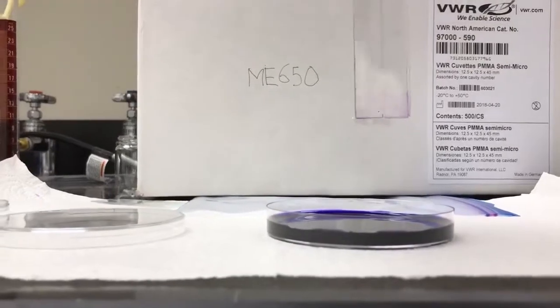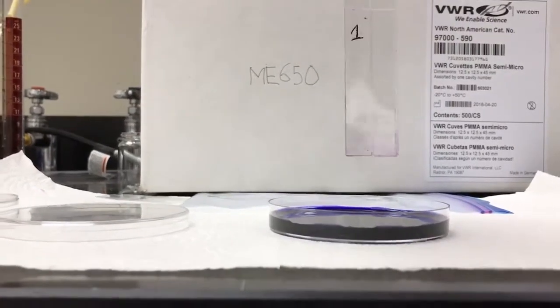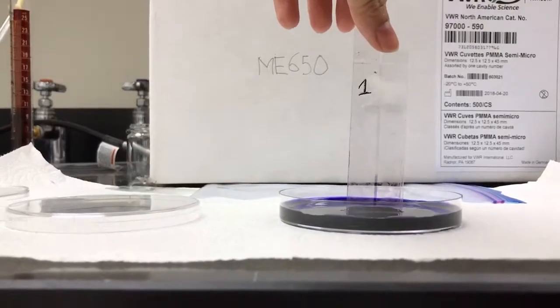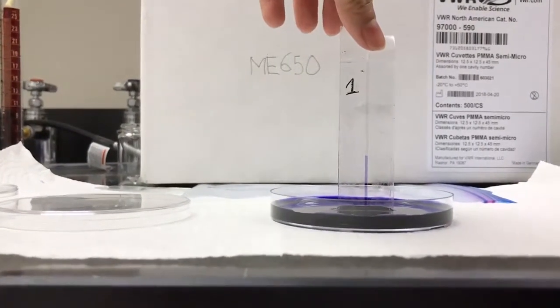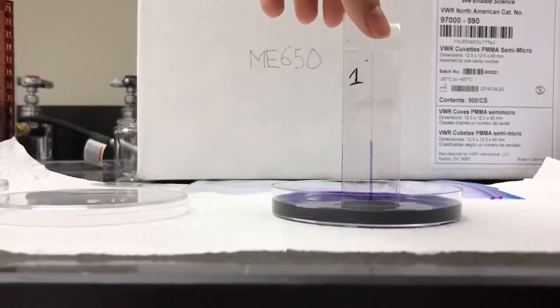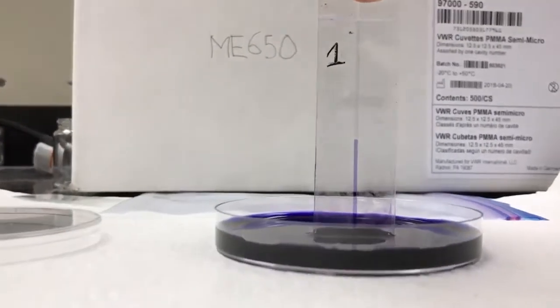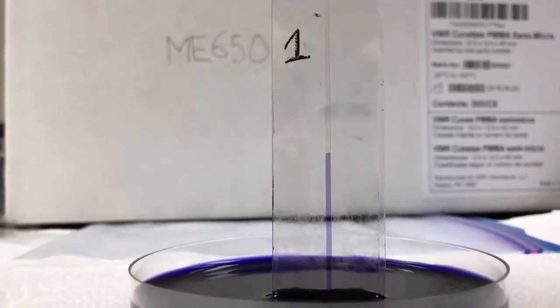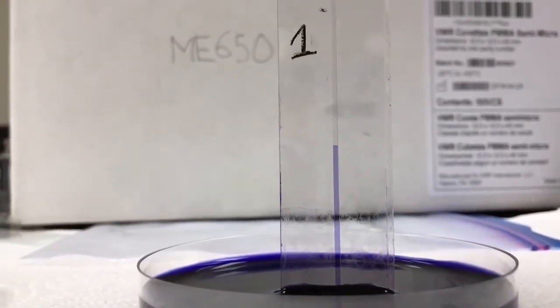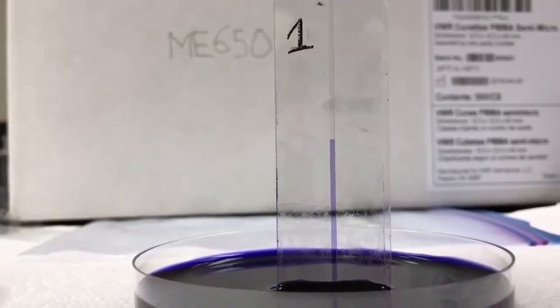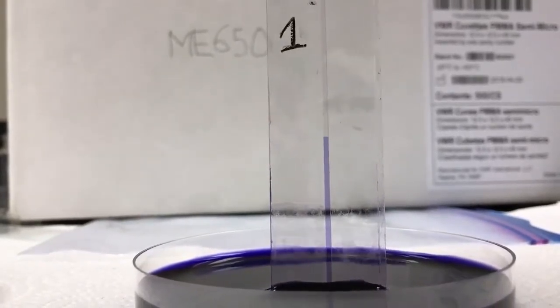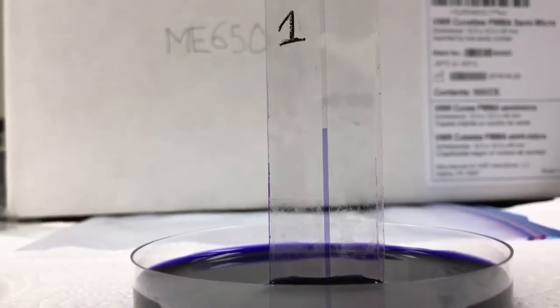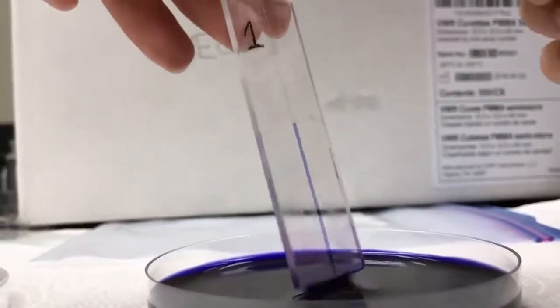Now I'm going to dip the first sample into the solution, which only has one layer of the double-sided tap. And now I mark the heights.